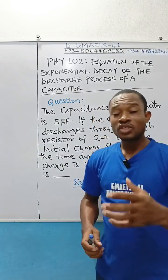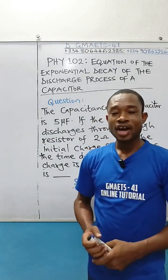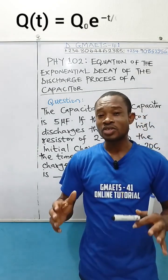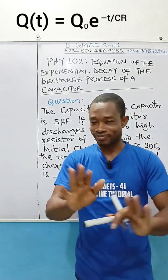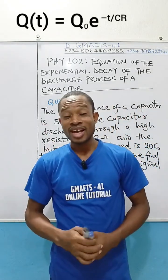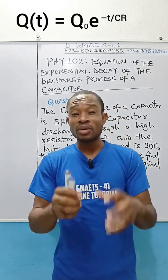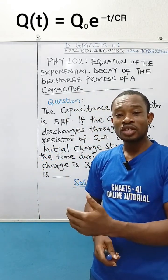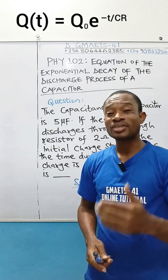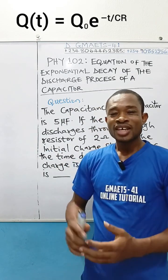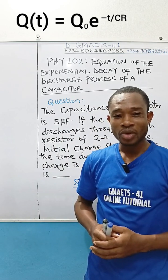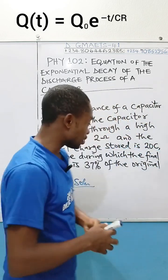Now, when dealing with the discharge process of a capacitor, we have what we call the equation of the exponential decay of the discharge process of a capacitor. Don't worry about that equation yet. I just mention that because the formula we need to use to determine the time during which the final charge is going to become 37% of the original, it is a part of that equation that we make use of. And the formula is as simple as this.